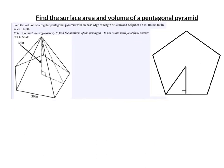Now the volume. We have a new pentagonal pyramid here, and they give us the height of the pyramid H and the base edge. The volume is one-third times the area of the base times the height.